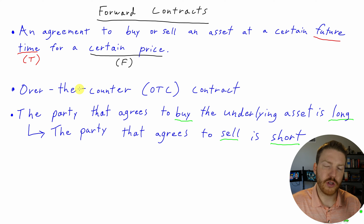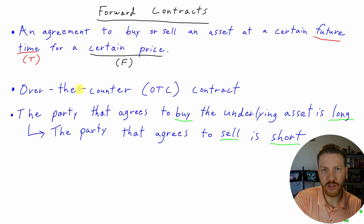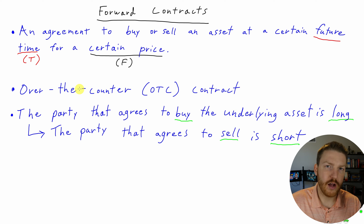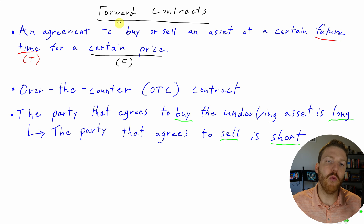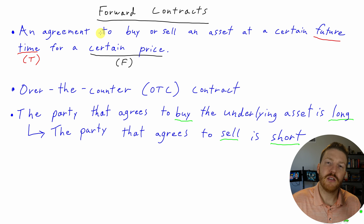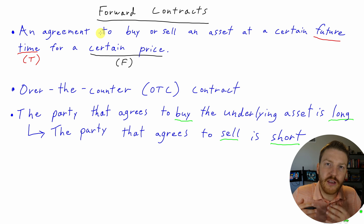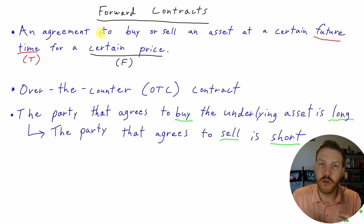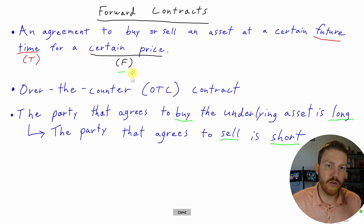Let's talk about this conceptually. Say I wanted to buy Nvidia's stock, and right now the price of that stock is $100. I could go out into the market and pay $100 right now — that would be called a spot contract because it happened right on the spot. Compare that to a forward contract where I could find a financial institution willing to sell me Nvidia's stock six months from today for a price of $105.